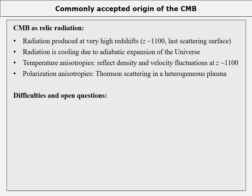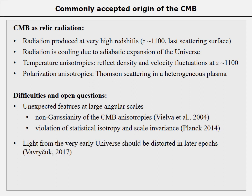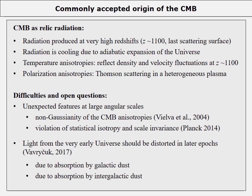For example, since CMB anisotropies were produced by random temperature fluctuations at the last scattering surface, they should have specific statistical properties. Detailed studies show these properties are violated — an unexpected non-Gaussianity of CMB anisotropies was revealed, along with a violation of statistical isotropy and scale invariance. There is also another point: it is quite strange that the CMB survived from redshift 1100 to the present without distortion caused by absorption by galactic and intergalactic dust, given that the CMB spectrum and total flux are measured with very high accuracy.